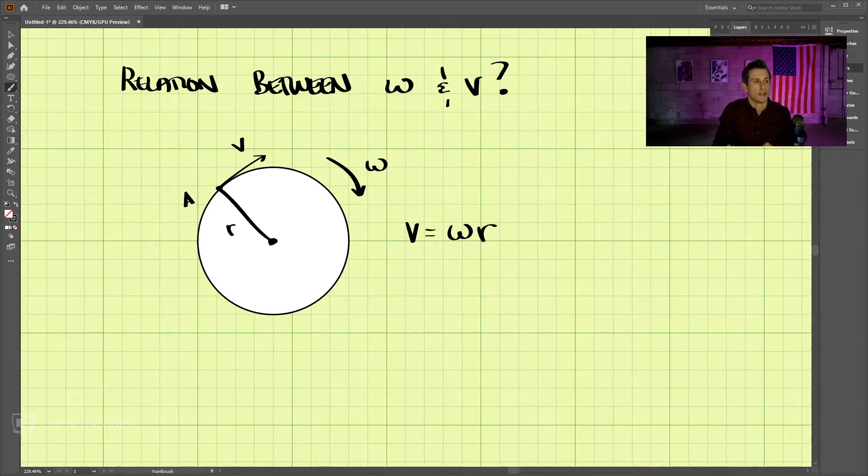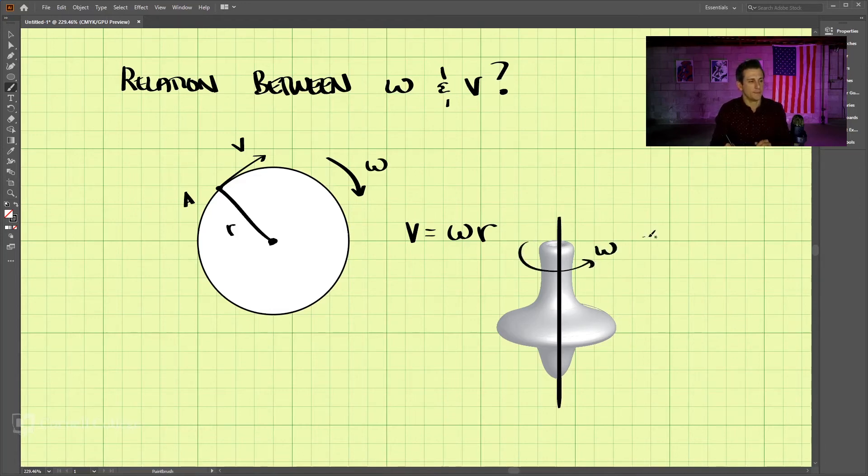Pull up an example. So we have the shape. And let's pretend that it is rotating about the center axis here. And it has an angular velocity of omega. And so how would we write omega as a vector?